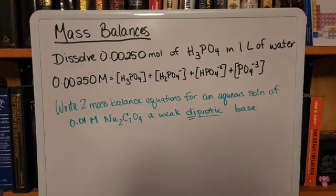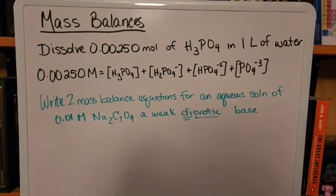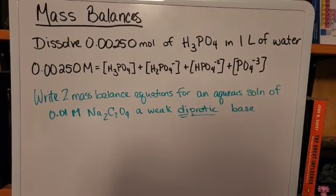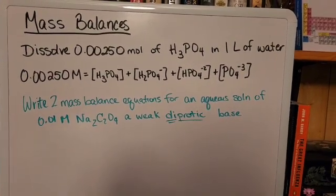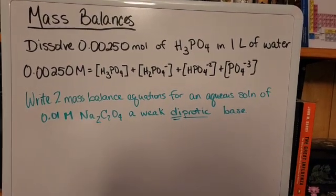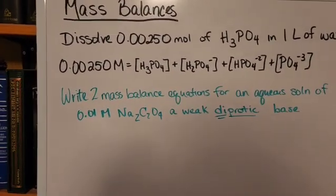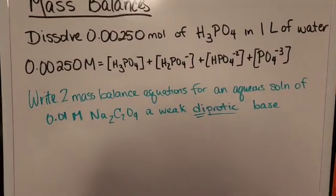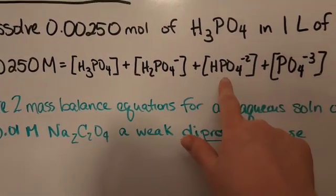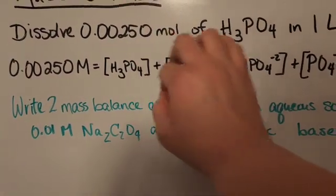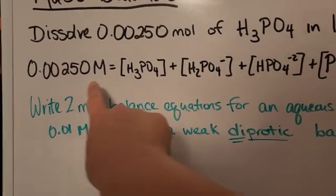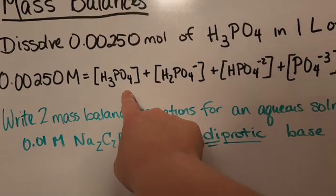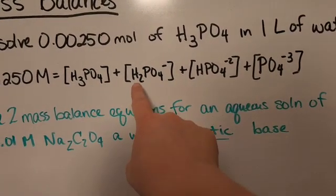Okay, so this might help clear them out a little bit on mass balances. So the first example we have is we dissolve 0.00250 moles of H3PO4 in one liter of water. Okay, that's going to give us a solution that is 0.00250 molar in strength. And that is going to consist of every one of these distinct species that all have that phosphate ion.